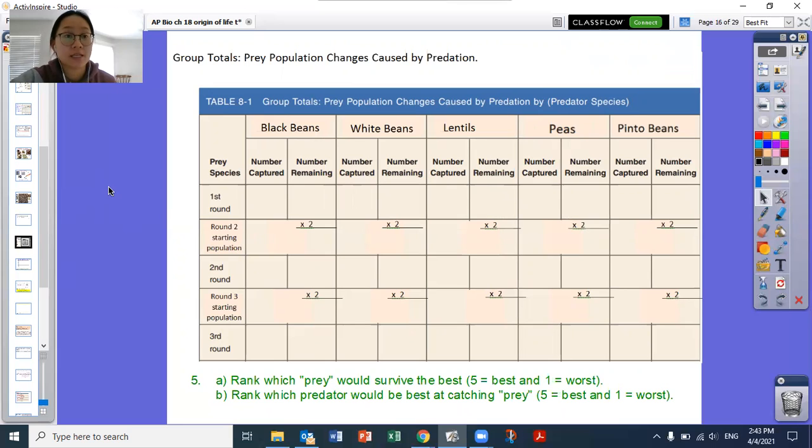So normally we would be picking up the prey for a certain period of time and then seeing how many are left over and then preparing the next generation to do it for a couple generations. I just want you to think about this. And for number five, you're going to do part A and part B. So you're going to rank which prey would survive the best. And for five, which predator would be best at catching the prey? So you're going to rank all five. Write out the names of all the prey types, all the bean types, and then you're going to rank them numbering five as the best at surviving, having the most left over, and one being the worst, having the least left over or being the easiest to catch. On the other hand, I also want you to rank the predators at which one would be best at catching prey. Which shape is the most likely to pick up all the prey and which one is the least likely to be able to pick up a lot of the prey?